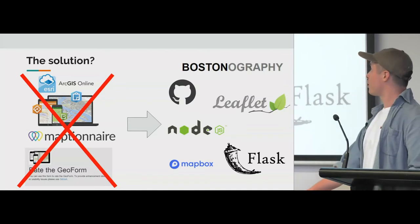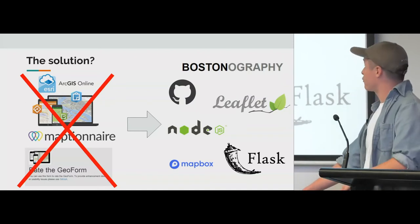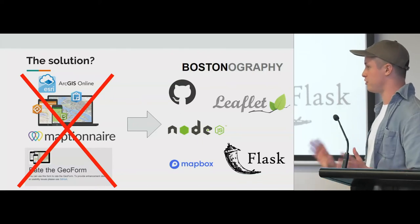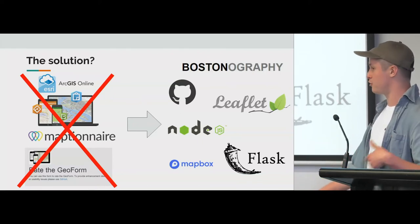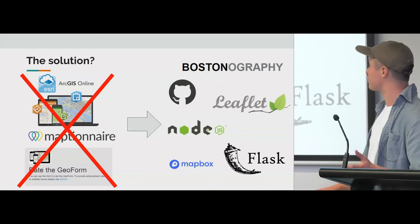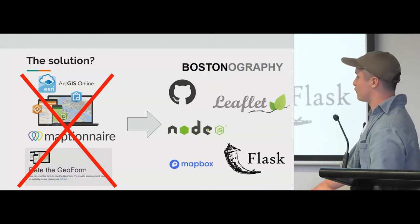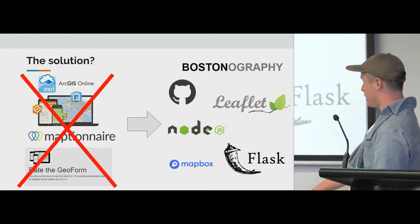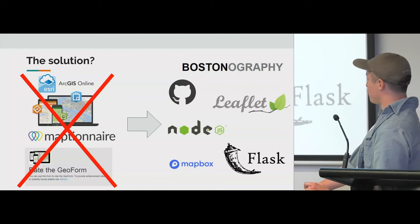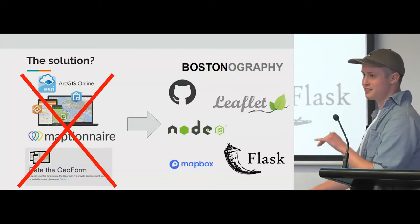I started off taking code from a project in Boston called Bostonography — they do a bunch of cool visualisations. They have one project called Hoods, coded on GitHub, so I took that as a base and adapted it to my needs. I used Leaflet's drawing function, Node.js, Flux as my web framework, and Mapbox for my base map. It was my first time making a website and I very much pieced it together — looking back, it was pretty Frankenstein stitched together.